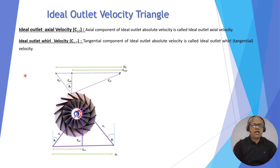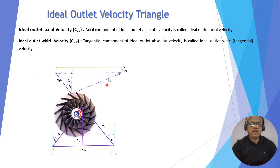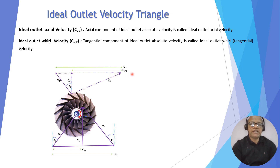The axial component of C2-dash is Ca2, and the tangential component of C2-dash is the ideal outlet whirl velocity Cw2-dash.